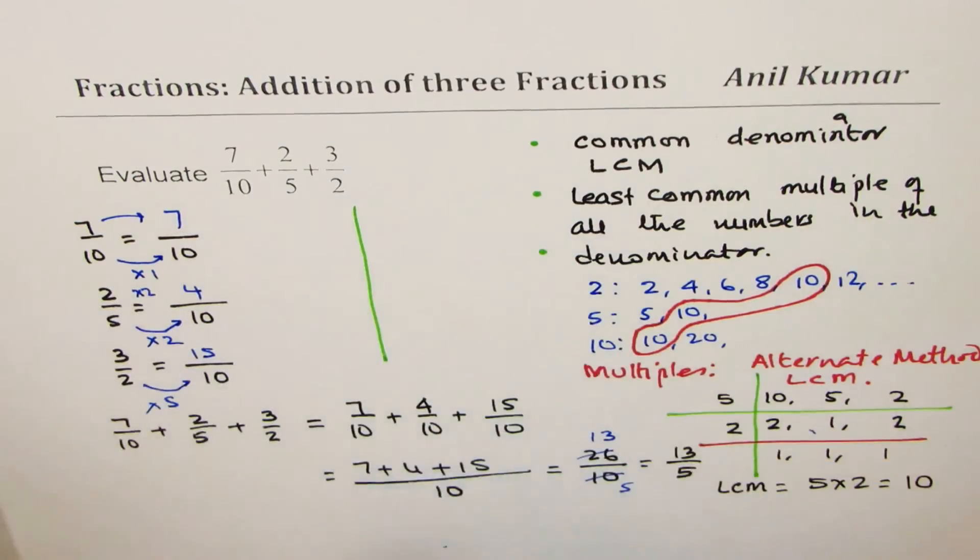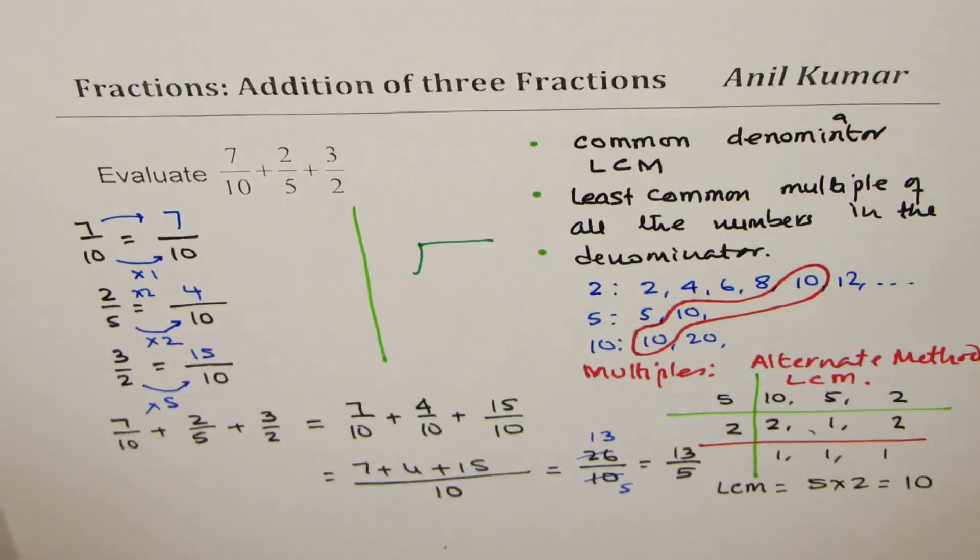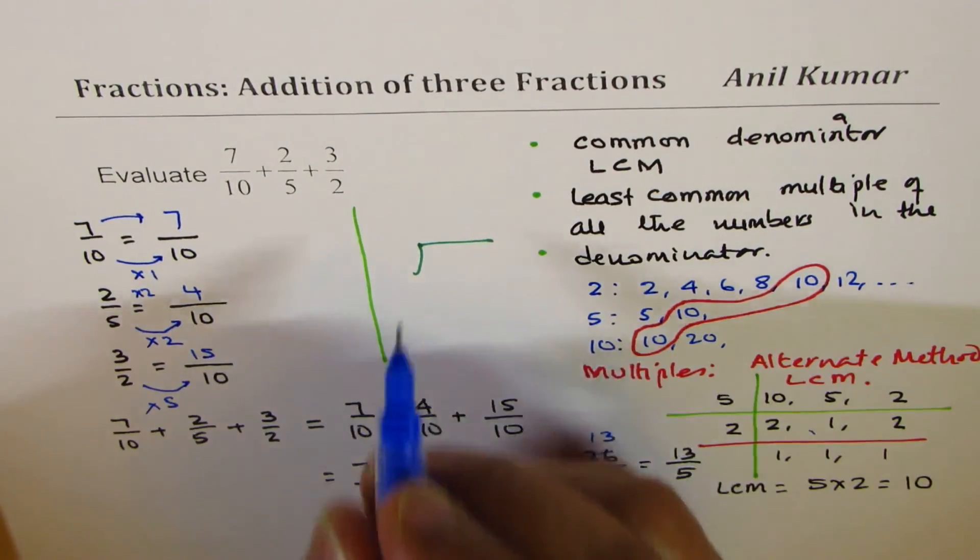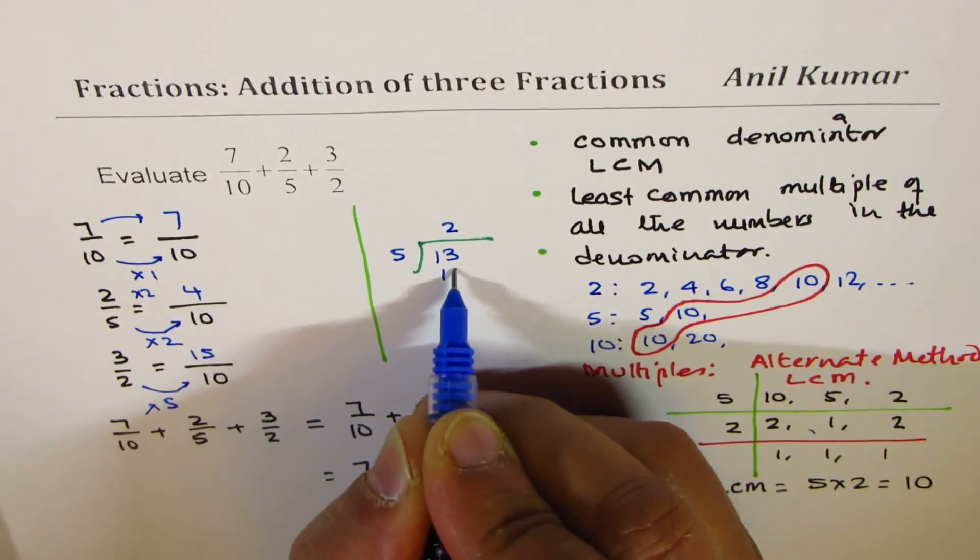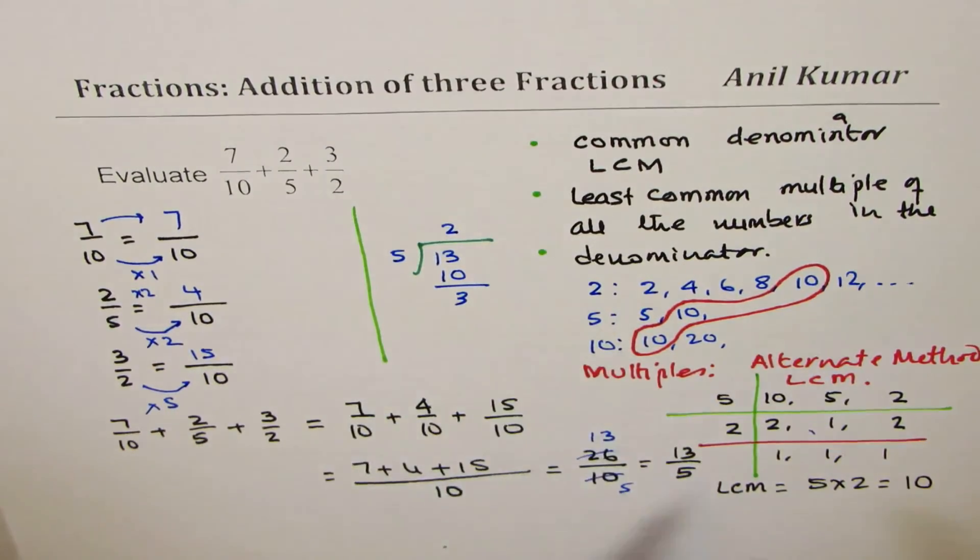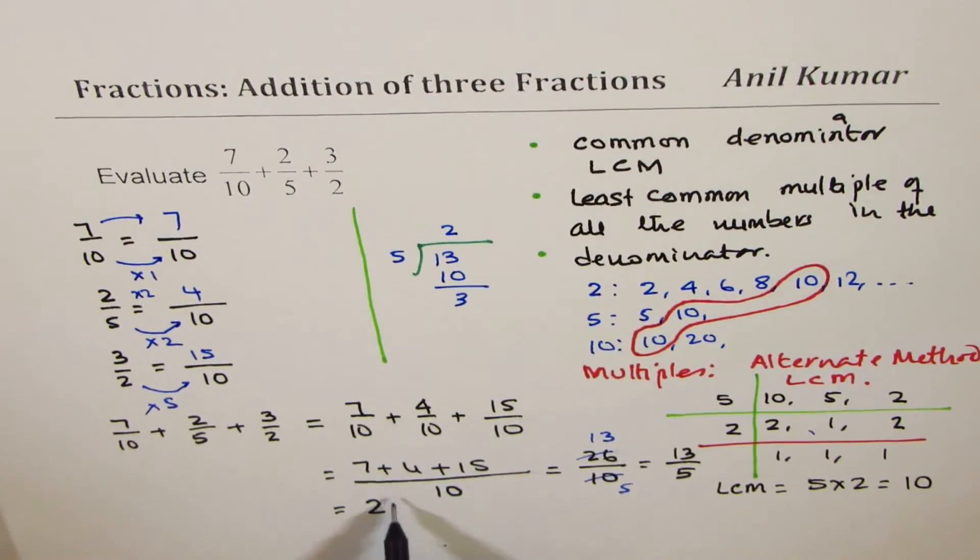Now 13 over 5 could be written as mixed number. Let me show you that part also, kind of important. We will divide 13 by 5. 5 goes 2 times which is 10, the remainder is 3. So what we get here is 13 over 5 could be written as 2 whole 3 over 5.